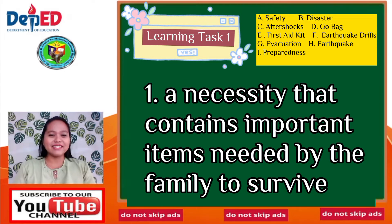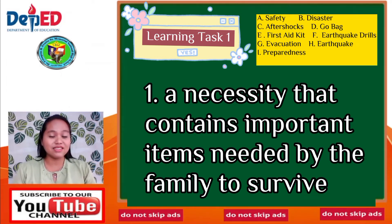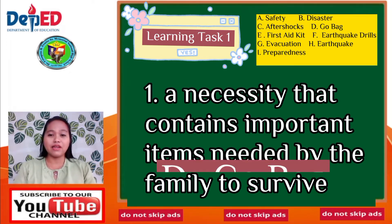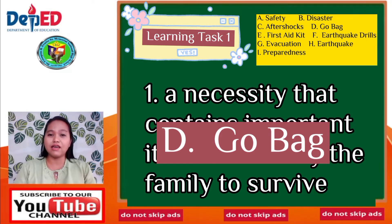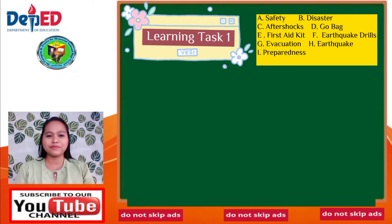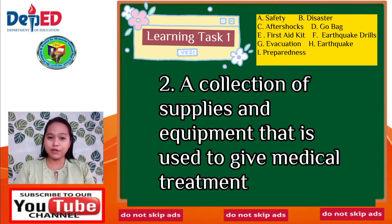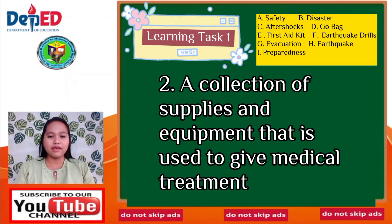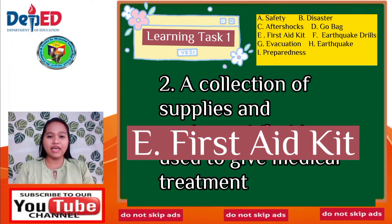Number 1: A necessity that contains important items needed by the family to survive. The answer is Letter I — Preparedness. Number 2: A collection of supplies and equipment used to give medical treatment. The answer is Letter E — First Aid.